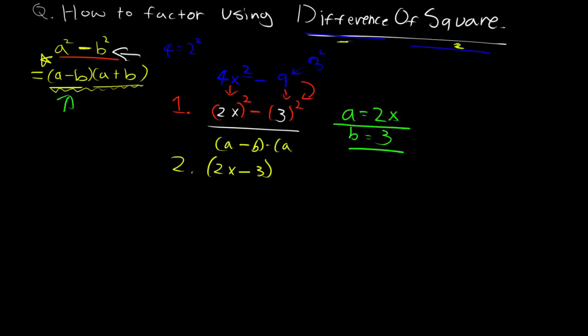And then what else do we have? We have (a plus b), right? So we're going to have another term that is multiplied, but this time it's going to be (2x plus 3). So this right here becomes our answer for difference of squares property.